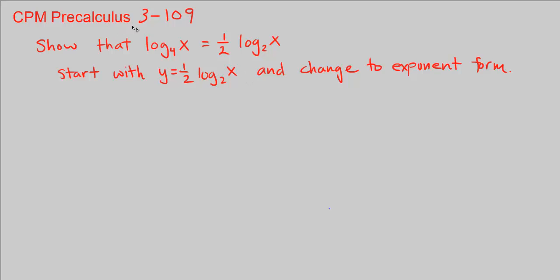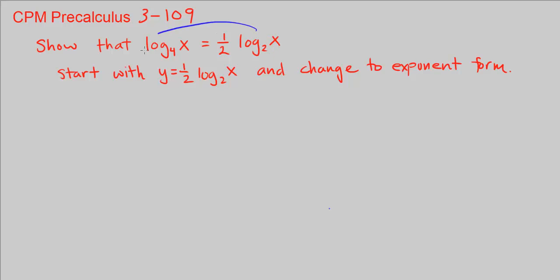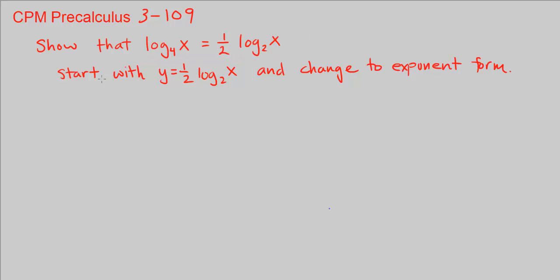This is CPM Pre-Calculus Chapter 3, Number 109. Here we want to show that log base 4 of x is equal to 1 half times log base 2 of x. 'Show that' means we want to prove they are equal.